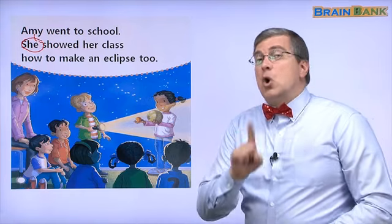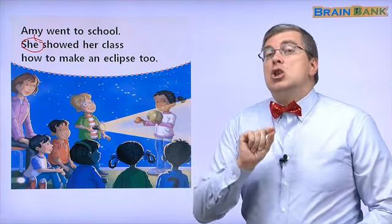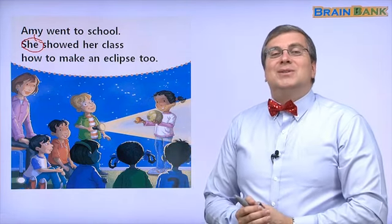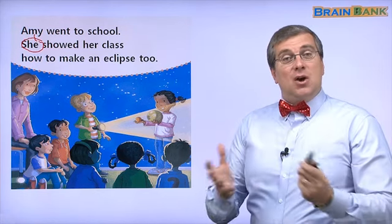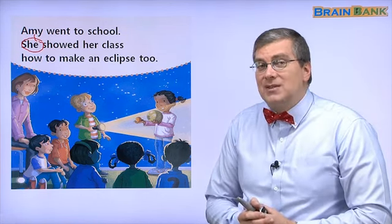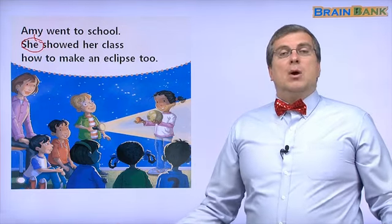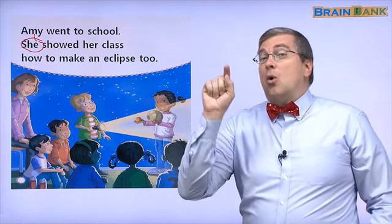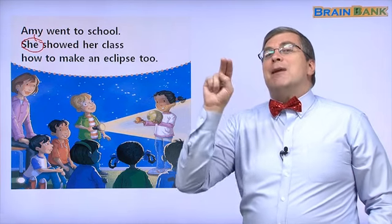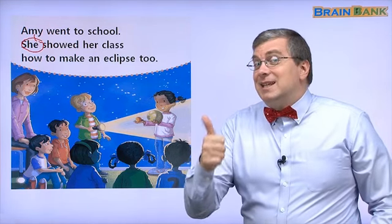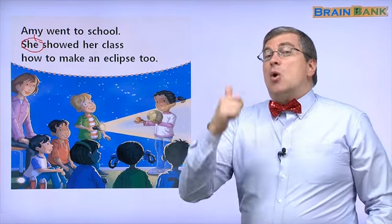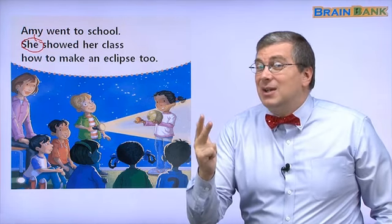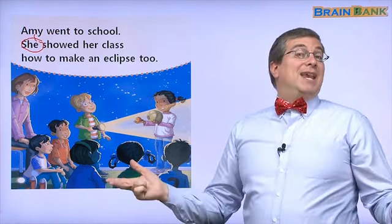So remember, solar is the sun, lunar is the moon. Now, you know how to make an eclipse. So, why don't you say to your friends, let's make an eclipse. What do you need? You need a flashlight. You need an orange. And you need a melon. The flashlight is the sun, the orange is the moon, and the melon is the earth. So, let's make an eclipse.